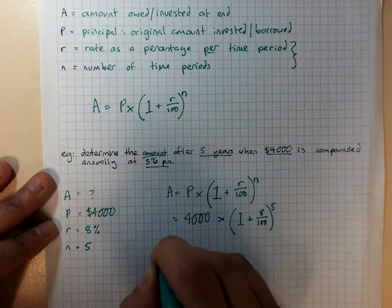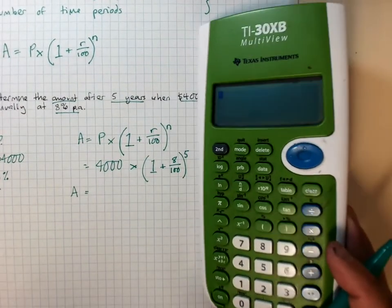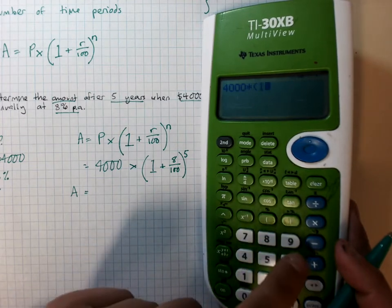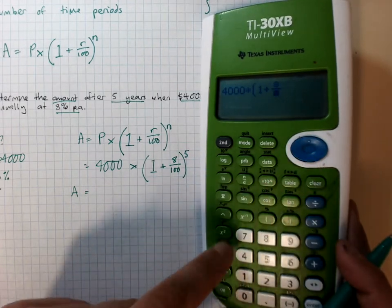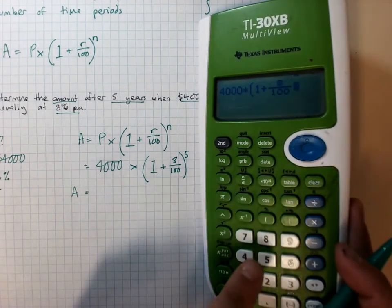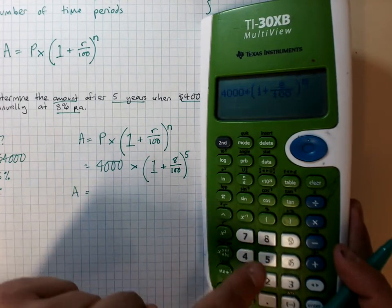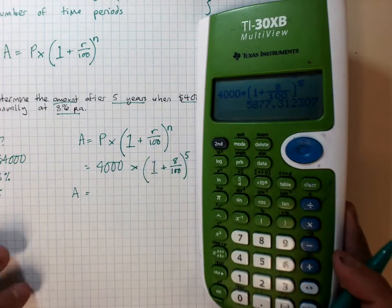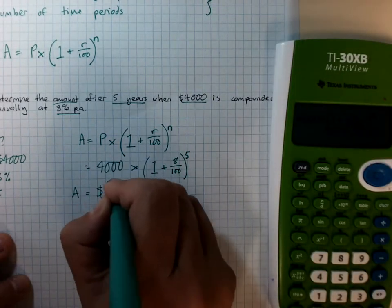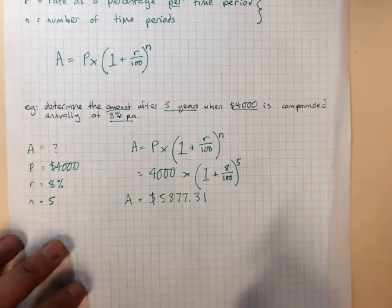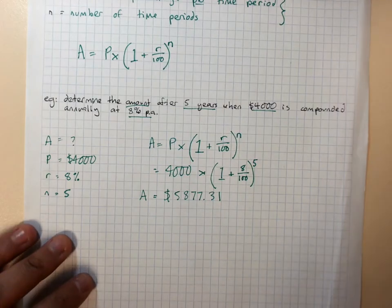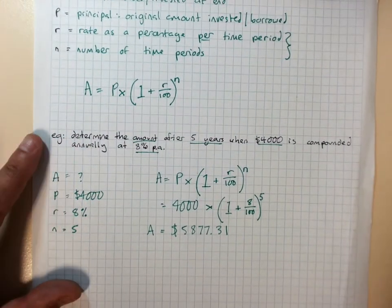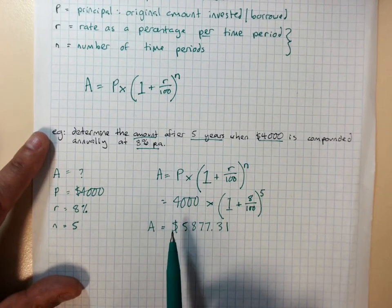Now, you can just enter this into your calculators with the brackets and the fractions as it is. 4,000 times brackets 1 plus fraction 8 over 100. Get out of the fraction. Close the brackets to the power of 5. Check that it looks exactly like that. Enter. $5,877.31. This is the total amount of the investment. The simple interest formula only finds the interest. The compound interest formula finds the total amount, the original principle and the interest.